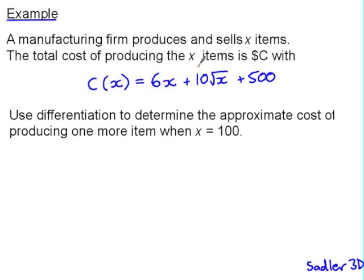So in this example we have a manufacturing firm producing and selling x items and we have the cost function for producing the x items. We are asked to determine the approximate cost of producing one more item when x is 100, so that special case of the small change formula: delta c, the small change in cost, is approximately equal to dc by dx.